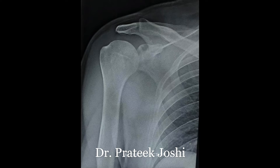This is the post-reduction x-ray of the shoulder AP view. It is showing a congruent reduced shoulder joint. After the dislocation has been reduced, the shoulder is immobilized in 10 to 20 degrees of external rotation for a period of 3 to 5 weeks.